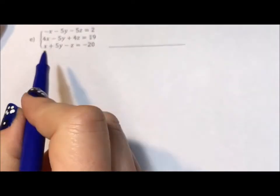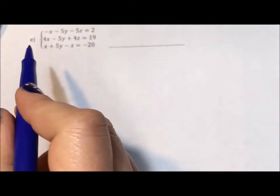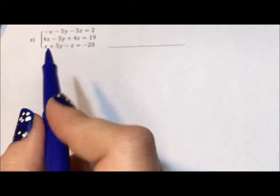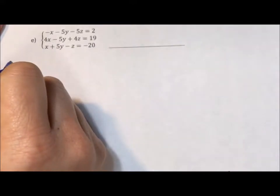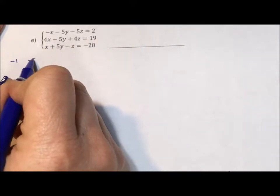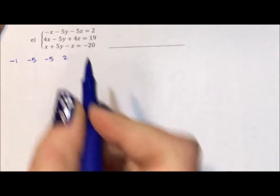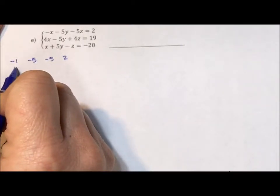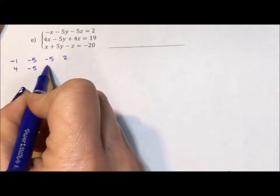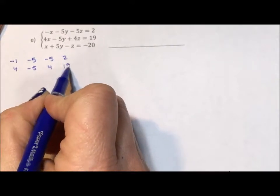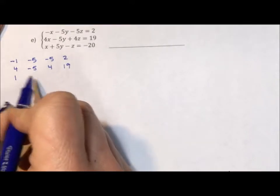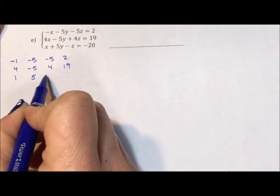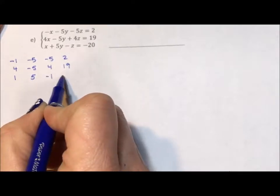The way we do it is we pull each of the numbers out of each of the equations. So our first equation has -x - 5y - 5z = 2. Second equation, 4x - 5y + 4z = 19. Last one, x + 5y - z = -20.